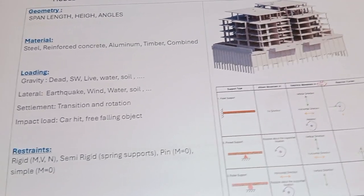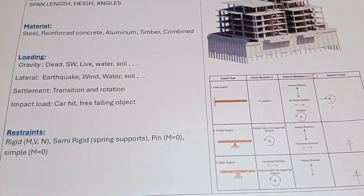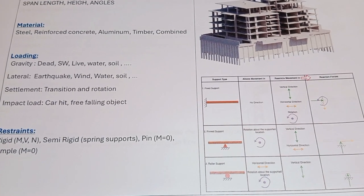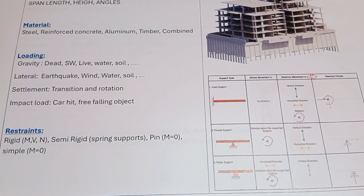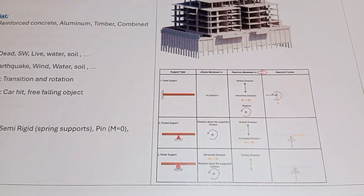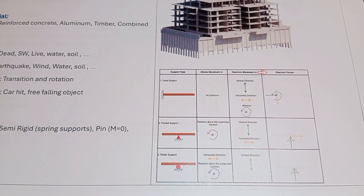The last step in modeling is to define the restraints. We have three types of restraint: rigid, semi-rigid, and pin or simple. The fixed or rigid support takes bending, shear, and in some cases torsion as well.